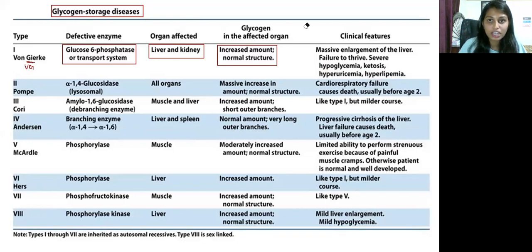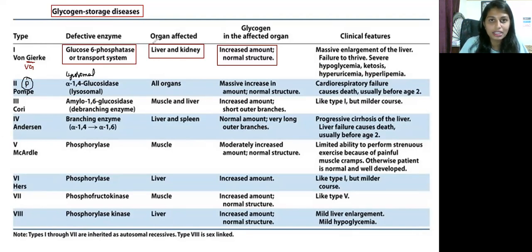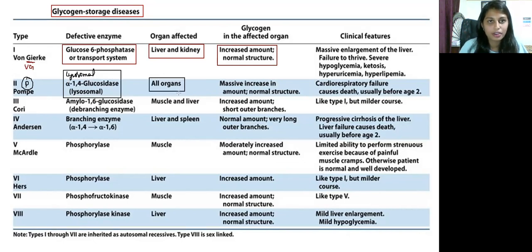Type 2 glycogen storage disease is called Pompe disease. The defective enzyme is lysosomal alpha-1,4-glucosidase. This enzyme is defective in Type 2 glycogen storage disease, and all organs are affected by this condition.